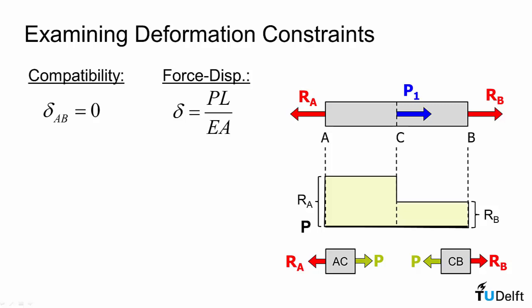Thus we can break up the problem into two axial loaded members in series and decompose the compatibility equation into two elongations delta AC and delta CB and they have to sum to equal zero. We can then formulate two force displacement relationships for length AC and length CB as shown here.